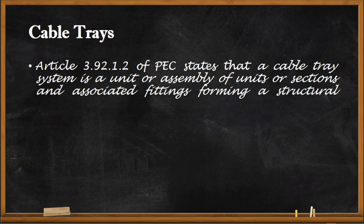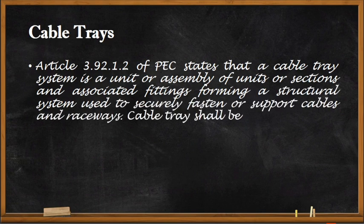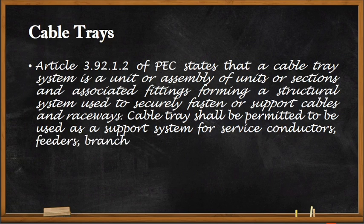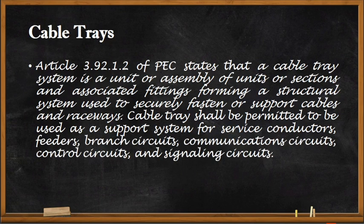Next is the cable tray. Article 3.92.1 of the Philippine Electrical Code states that a cable tray is a unit or assembly of units or sections and associated fittings forming a structural system used to securely fasten or support cables and raceways. Cable trays shall be permitted for use as support systems for service conductors, feeders, branch circuits, communication circuits, control circuits, and signaling circuits.